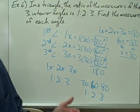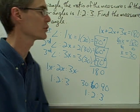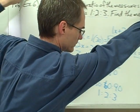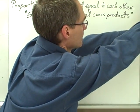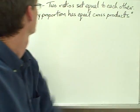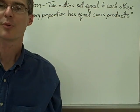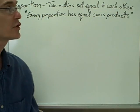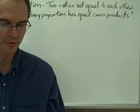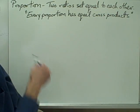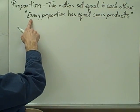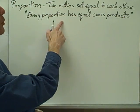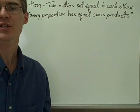You have another example similar to this one in example number 7 — I want you to try that one on your own. A proportion is just two ratios set equal to each other. Proportions have a particular property that's very useful: every proportion has equal cross products.